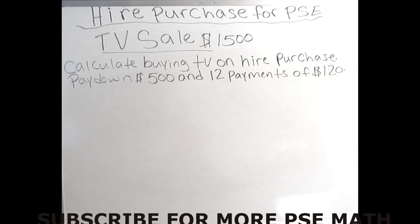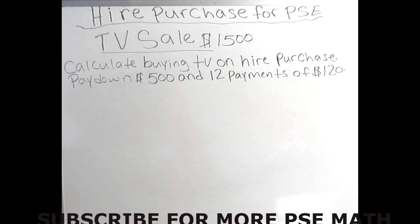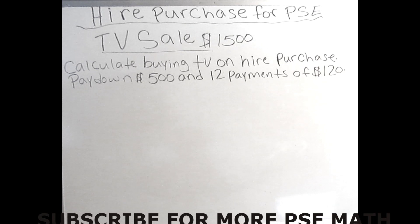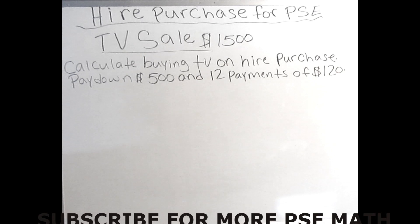Welcome back. As we continue working on our math problem, we move to the second part of hire purchase. In part one we purchased the TV on sale and got a 15% discount of $225, which we subtracted from $1500. Now we're going to purchase this TV on hire purchase. Hire purchase means you don't have the money at the moment but you want the product, so the company will let you take the product home and pay a small fee, giving you the product in monthly installments.